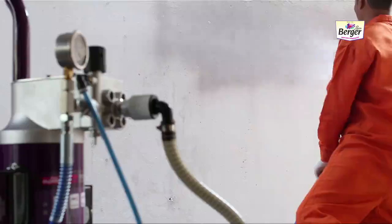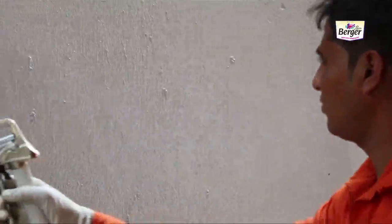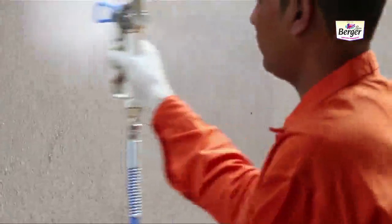Move air gun to the left and right while spraying and repeat with 50% overlap each time. Use water for water-based paint and thinner for oil-based paint.